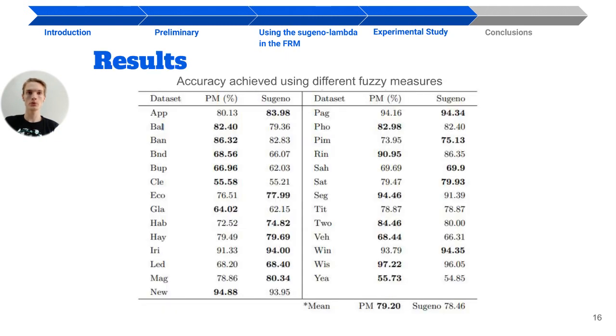In the table, you can see the accuracy achieved using different fuzzy measures applied to the 27 real-world datasets. Each row represents the average accuracy rate obtained in the 5-fold datasets,